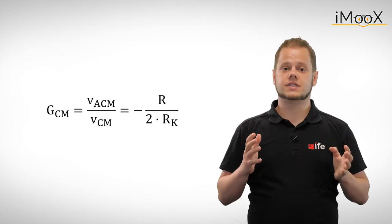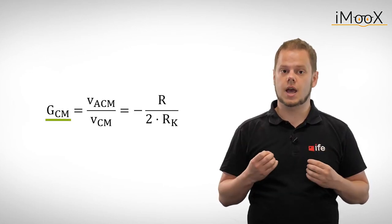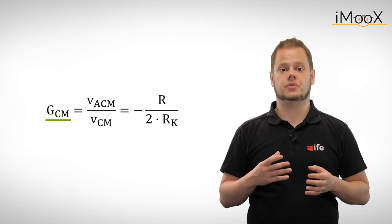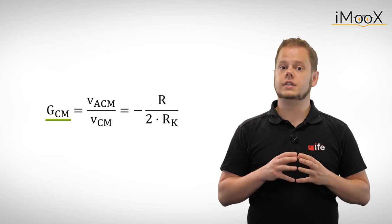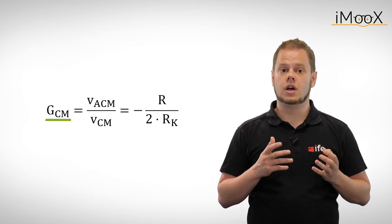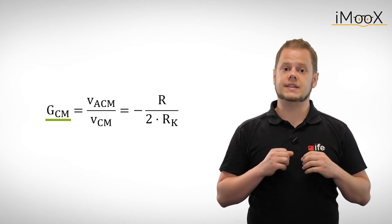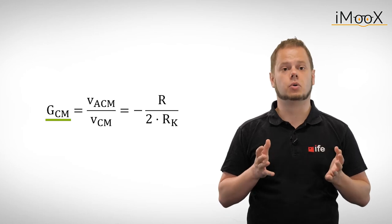This allows us to define the common mode gain GCM. A differential amplifier should have a very small common mode gain. Ideally, the common mode gain is zero and the differential amplifier basically ignores any common mode input signals.